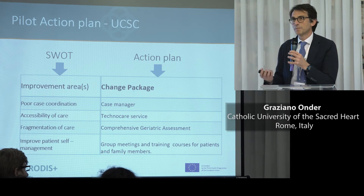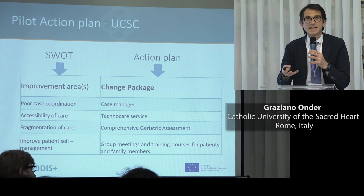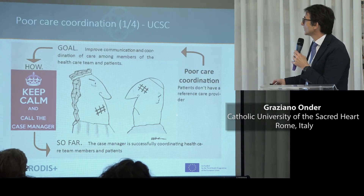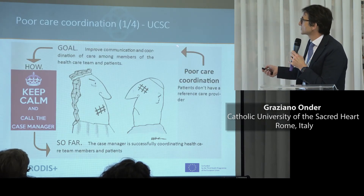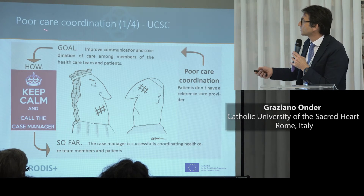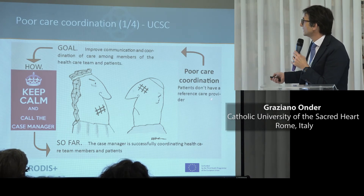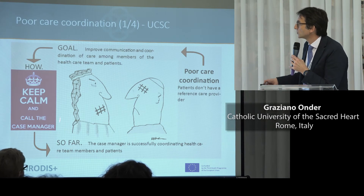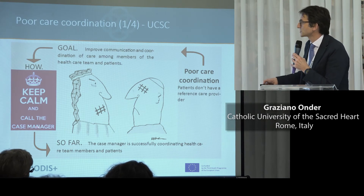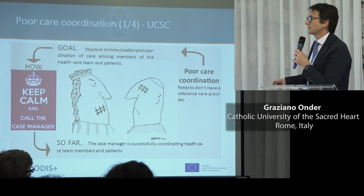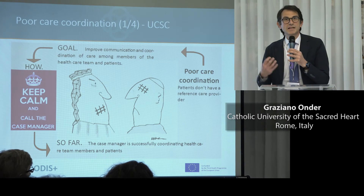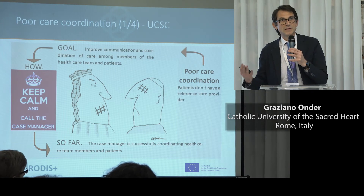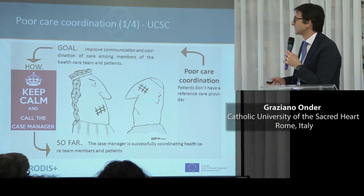For each of these areas we developed a plan that is now being put in place. For example, for poor coordination of care: identification of the problem, goal of the intervention, how to perform the intervention by the use of a case manager, and implementation. What is missing here is the outcome, which is something we are going to measure in 2020 at the end of the implementation.